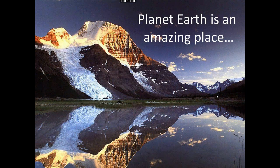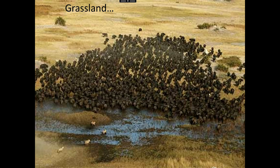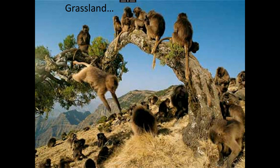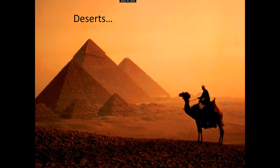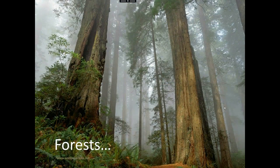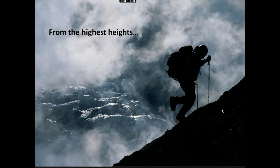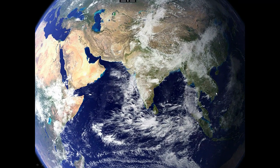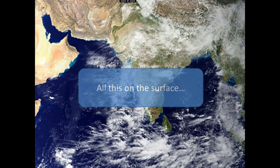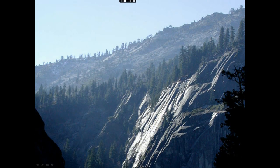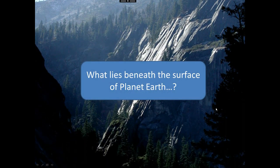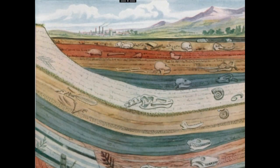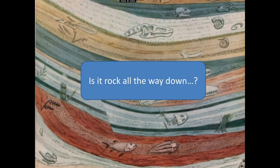The surface of the earth is an amazingly varied place — so many different habitats and environments right across the surface. 70% of the earth's surface is covered in ocean, but we've also got grassland, forests, deserts, ice caps, and mountains. Right from the highest heights to the deepest depths, there's an amazing amount of variety on earth. But all of that is just on the surface — what if we were to dig deeper into the interior of the earth? What would we find?